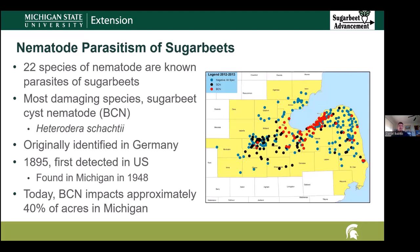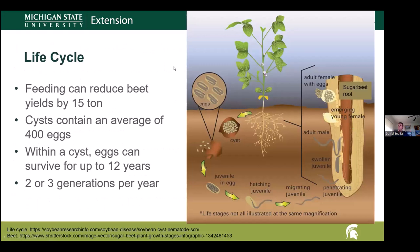Today, sugar beet cyst nematode impacts approximately 40% of the sugar beet acres here in Michigan. That's a significant economic impact, but it can be found in more acres than that. On the screen, I've got an older map from a survey done back in 2012 and 2013, looking for both sugar beet and soybean cyst nematode, which are similar but yet different groups of nematodes. Any location with a red dot shows where sugar beet cyst nematode was found. The black dots are where soybean cyst nematode was found, and the blue dots were negative for either species.